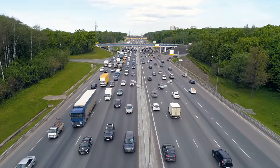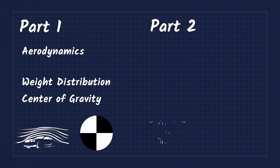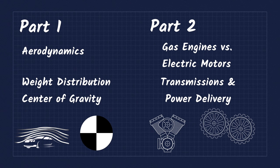So let's break down EVs in the following categories: Aerodynamics, weight distribution and center of gravity, engines versus motors, and transmissions and power delivery.